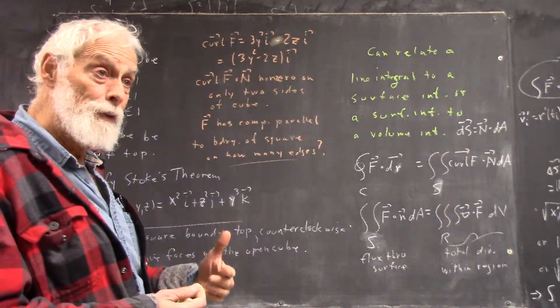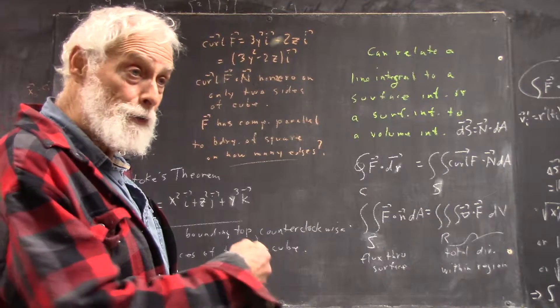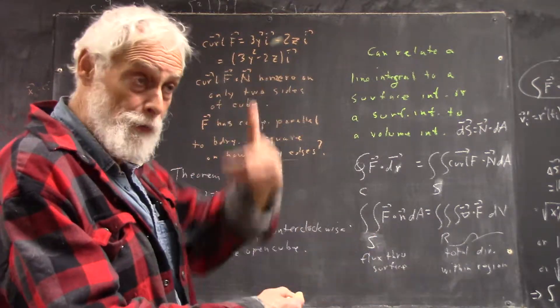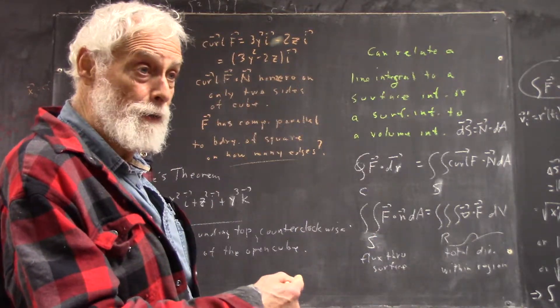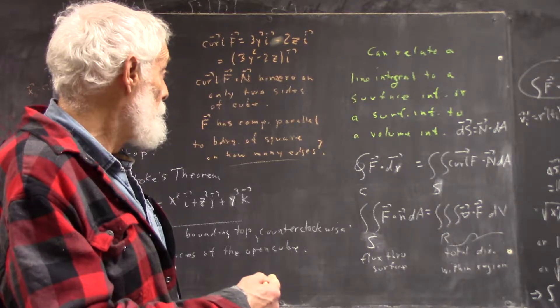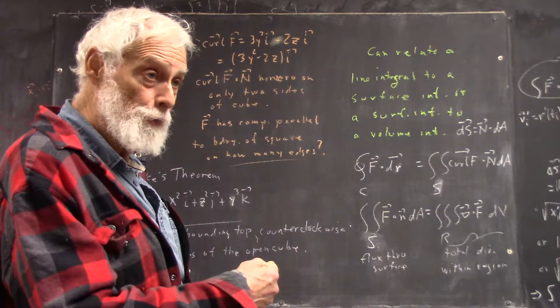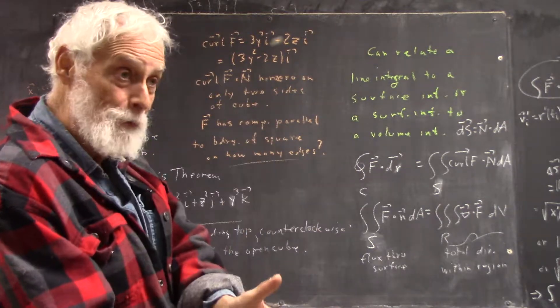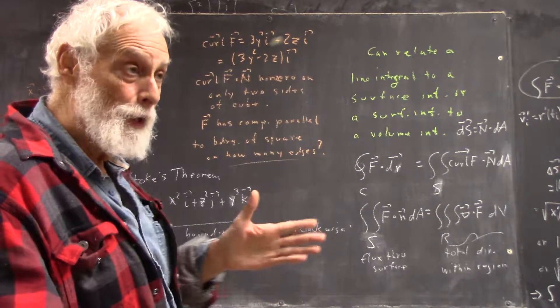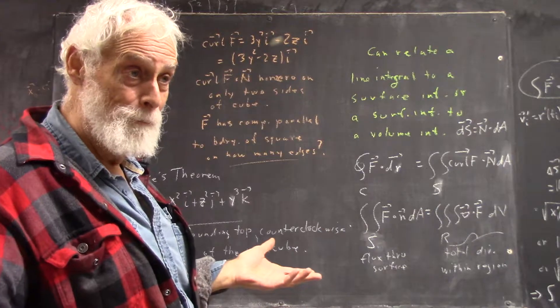And that only occurs when the normal is in this direction, if X is here, Y is here, Z is here, the usual orientation that I used in class. And there are only two surfaces in the cube, this one and this one, where that's so. You can visualize that.